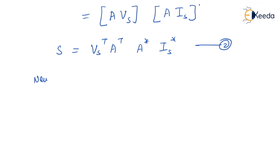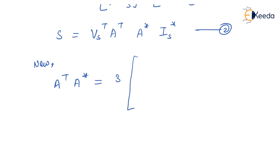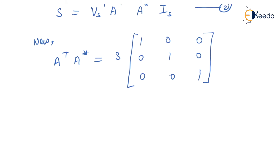Now, A transpose into A conjugate equals 3 times the identity matrix. So this equals 3 times the identity matrix: 3 multiplied by [1 0 0 / 0 1 0 / 0 0 1].